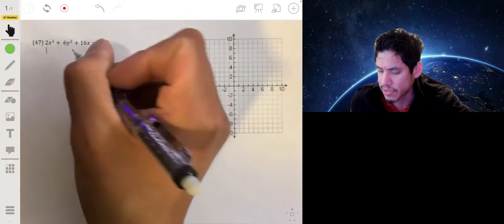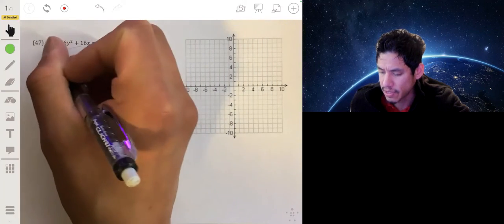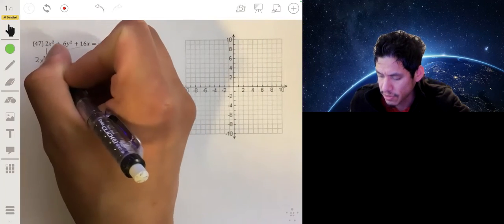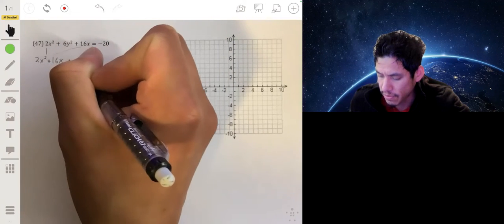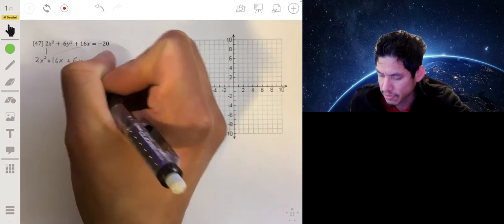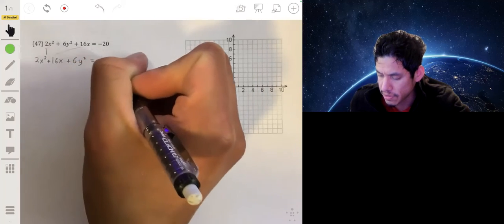So I would put the x terms first: 2x squared plus 16x, followed by 6y squared is equal to negative 20.